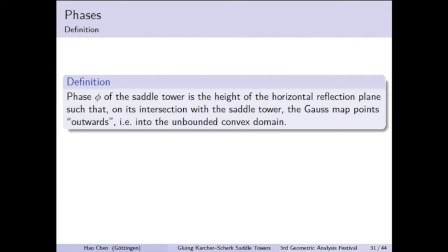Recall that a saddle tower has two reflection planes. We need to specify which one to use to define the phase. The choice is just a matter of convention. But if one reflection plane is chosen, as we do here, and its height, say φ, is defined as the phase, then the other reflection plane must be at height φ plus π, modulo 2π.